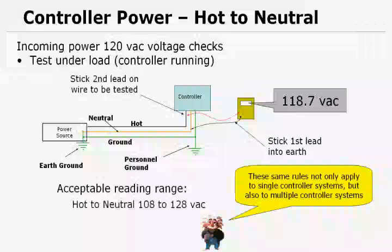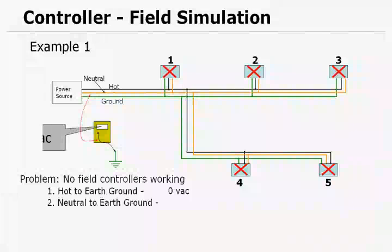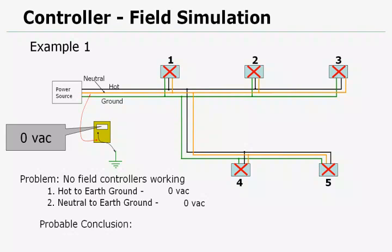Let's do a quick field simulation. Here's our problem: no field controllers are working. In this example, we've got five controllers. So we're going to take some readings, the same readings that we just took. Hot to earth ground, 0 volts. So we know we've got that reading. Neutral to earth ground, 0 volts. Right now we'd come up with a probable conclusion that we have no power coming out of our power source. Logically we'd go to the power source and see if we have power into it, if it's a breaker turned off, a fuse is blown, or just what's going on at the power source. So that was example one.